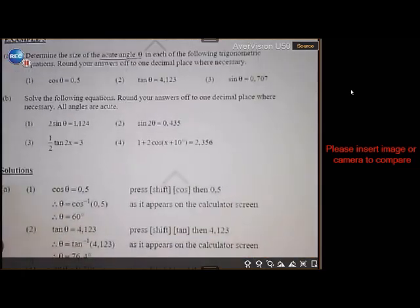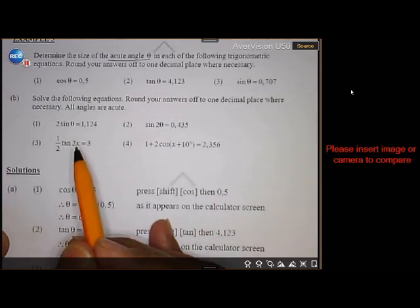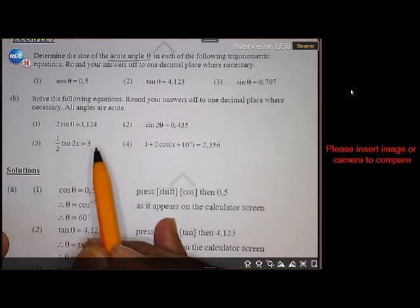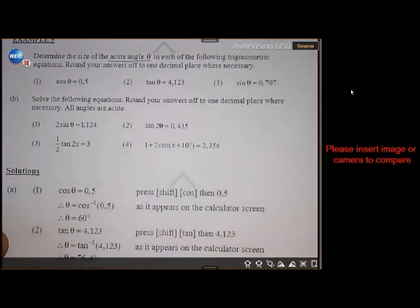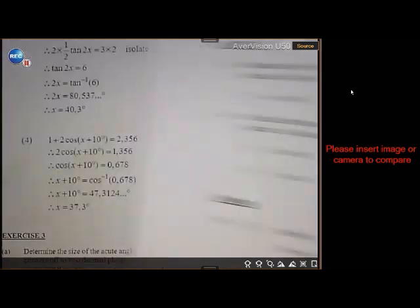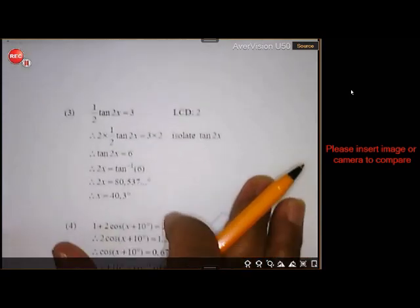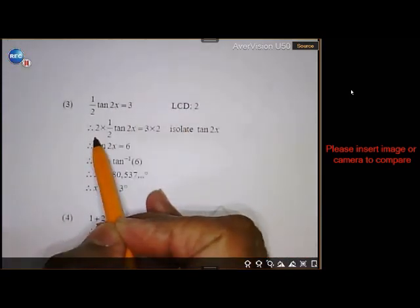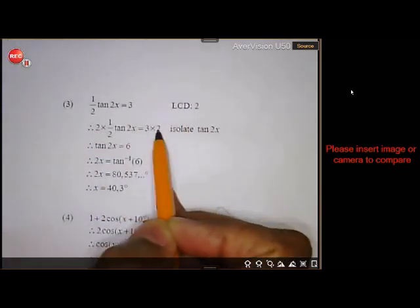Then the next one is this one here. Half tan 2x equals 3. So what are we going to do here? Let's see. For that one, we are going to first multiply both sides by 2. Or you can say divide by a half.